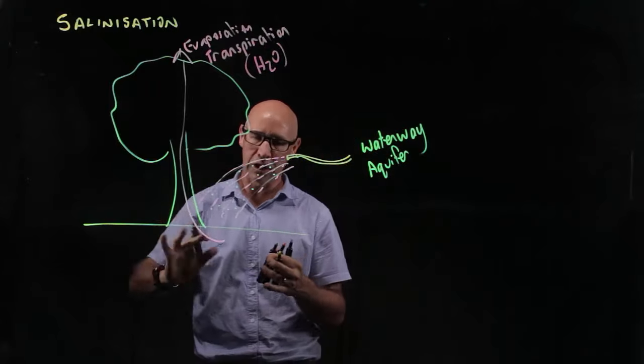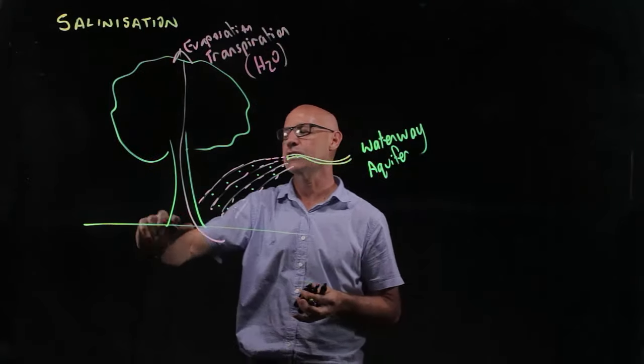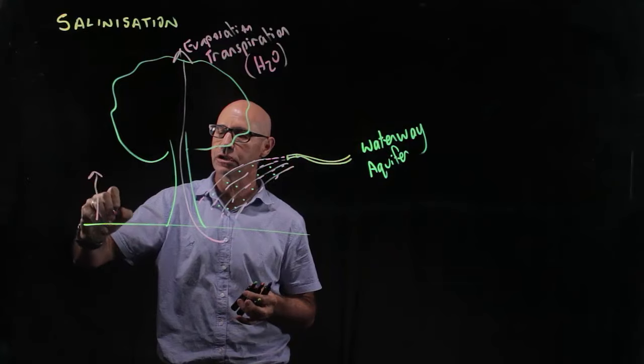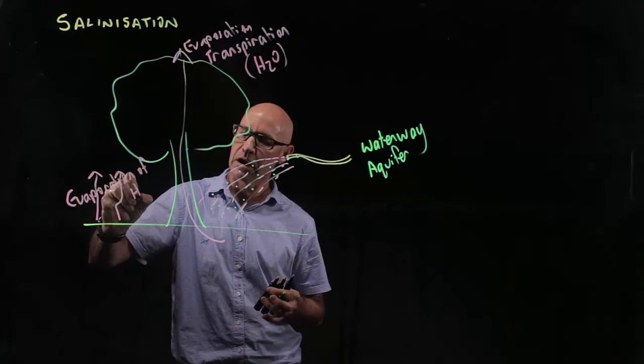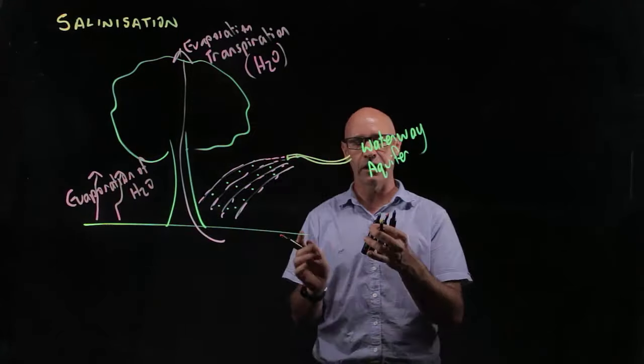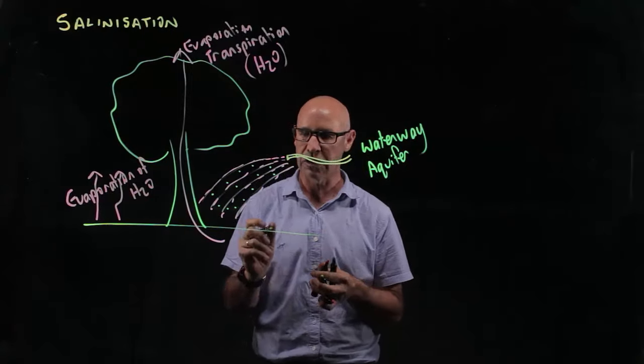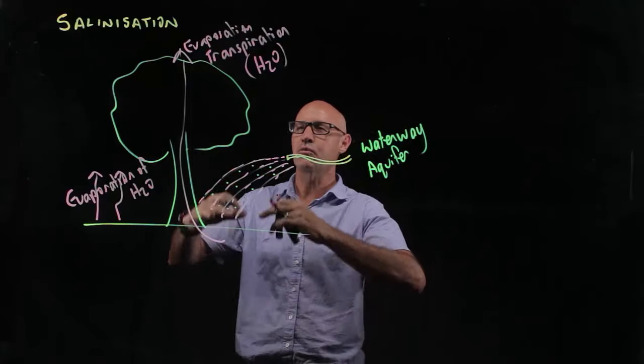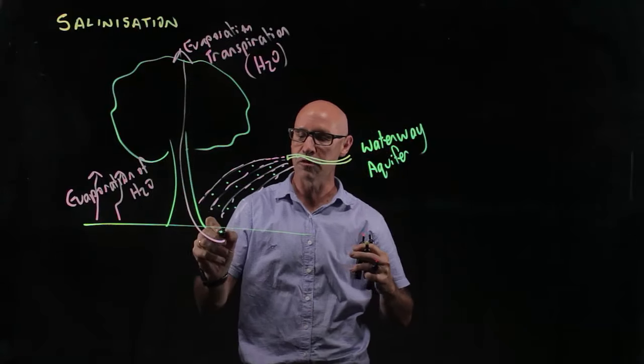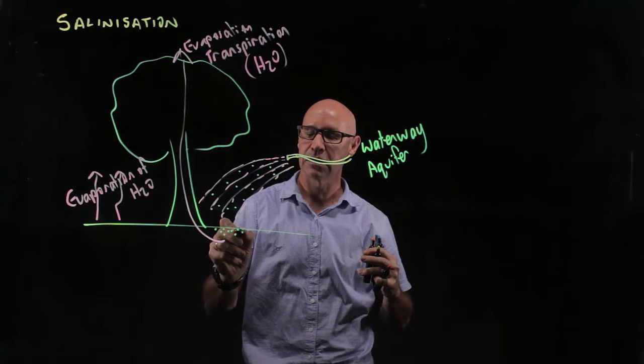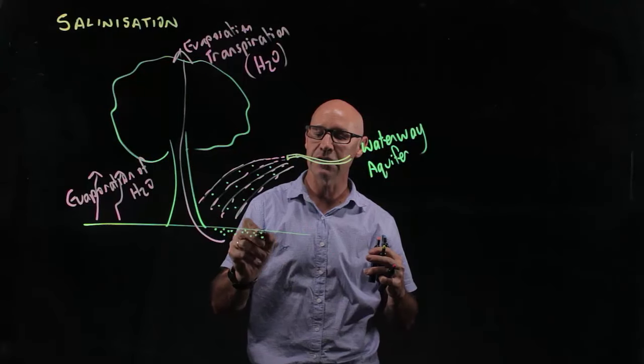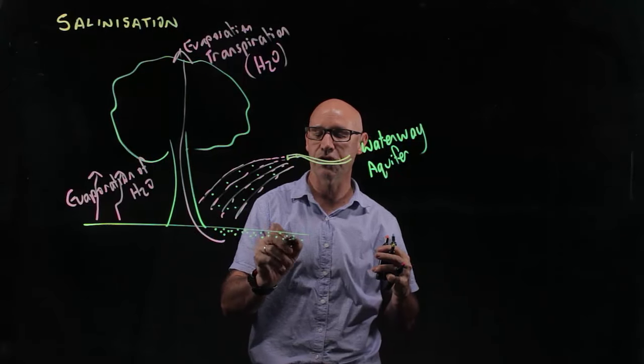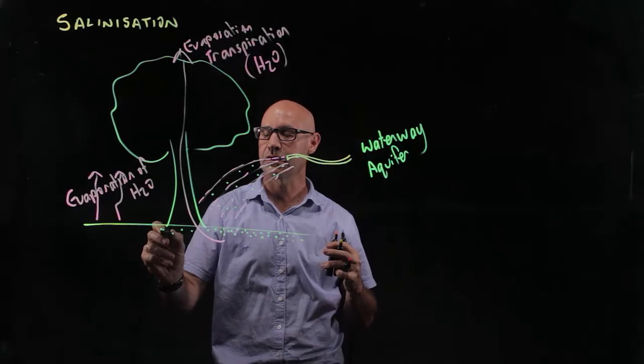As well, sun beating down onto the land causes evaporation of the water. So again, evaporation of the water but not the salt. While we're putting salt and water onto the land, the water evaporates and the salt remains behind. So we have an increased concentration of salt being left behind.